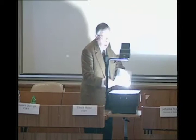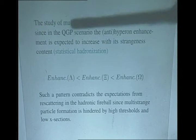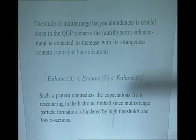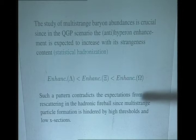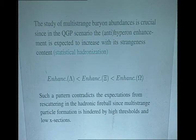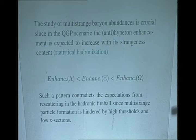Why we concentrate and spend a lot of time to extract the multiple strange baryons, the Xi and the Omega. Their study is crucial because in the QGP scenario, like in any statistical hadronization scenario, their enhancement is expected to increase with its strangeness content. Therefore, one expected Omega more enhanced than Xi, more enhanced than Lambda, with respect to normal hadronic interaction. Such a pattern contradicts the expectation from rescattering in the hadronic fireball, since multi-strange particle formation is hindered by high threshold and low cross-section.